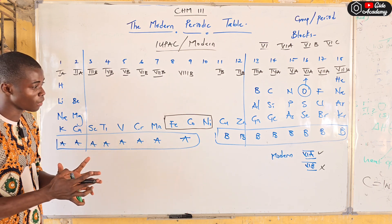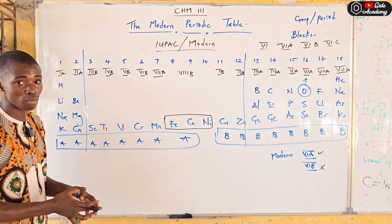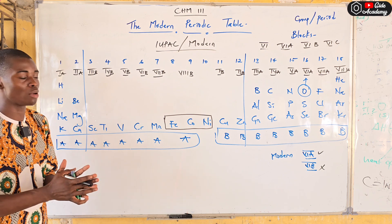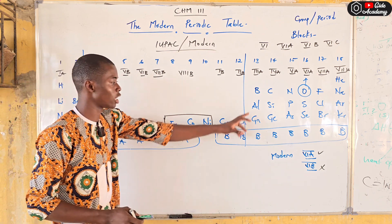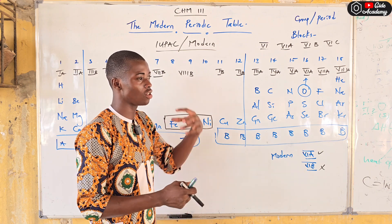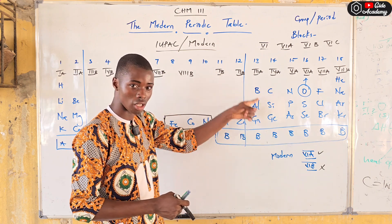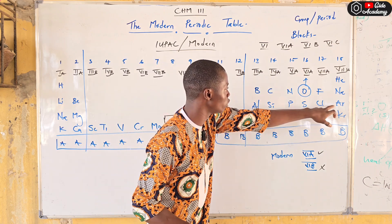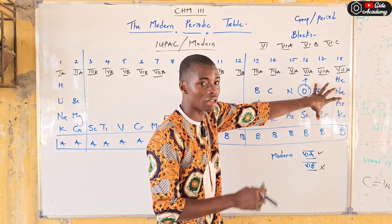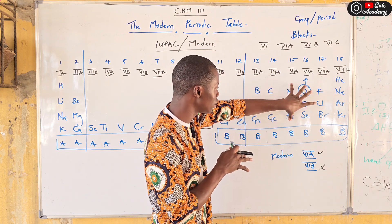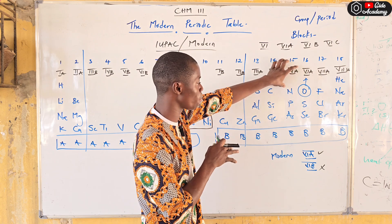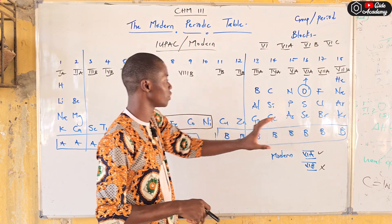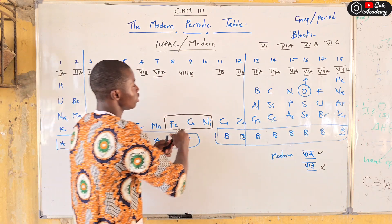A shortcut: if a question involves any of the first 20 elements — such as aluminium, sulfur, or argon — and asks which group in the modern periodic table, the answer will always be A. But if the question specifies the IUPAC periodic table, the answer for those same transition-side elements will be B.